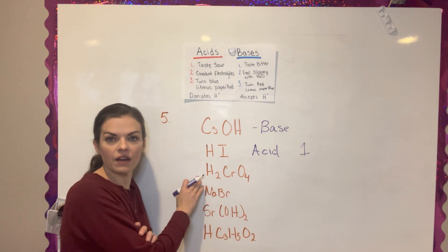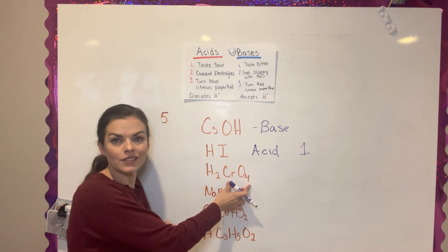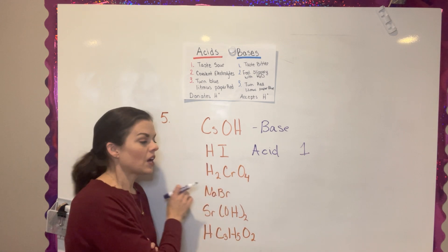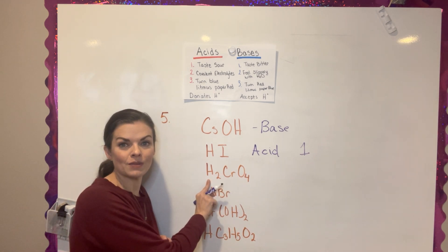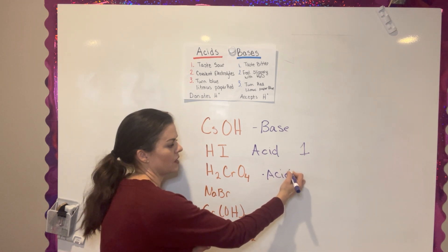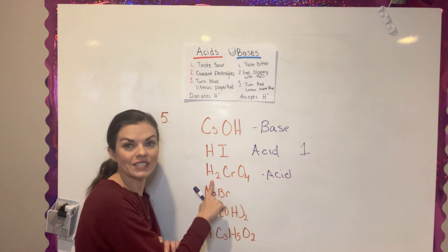Down here we have a polyatomic ion that some of you may remember. We have hydrogen and chromate. Now it has two hydrogen in the beginning. So this is an acid and it actually has two hydrogens that it can give away.